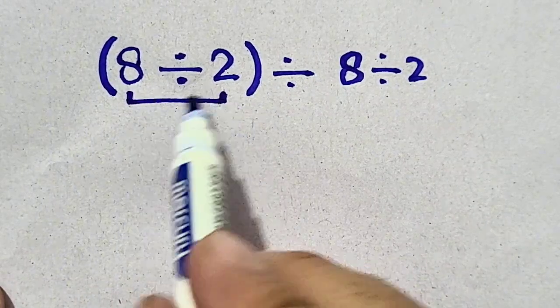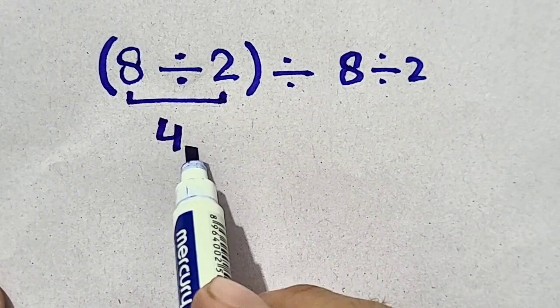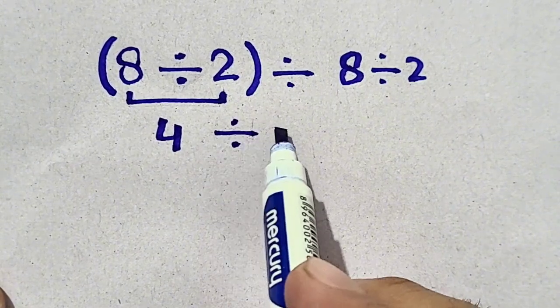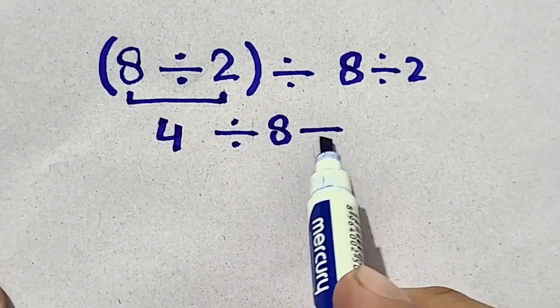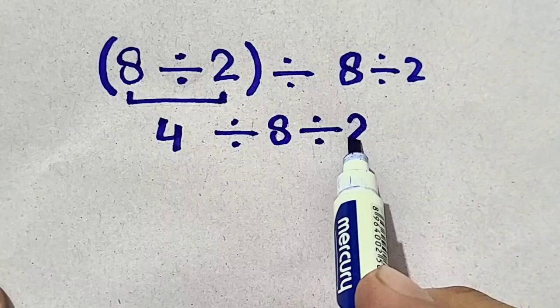So, 8 divided by 2, we will get 4 divided by 8 divided by 2.